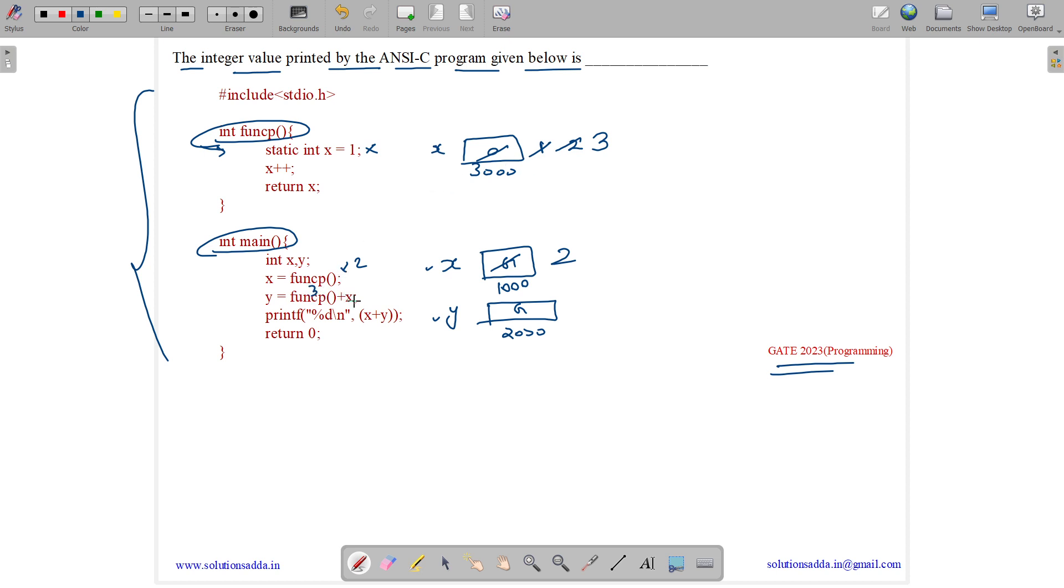3 plus x. So what is this x? Local x will be used. What is local x? Local x is 2. 3 plus 2 is 5. Y has value 5.